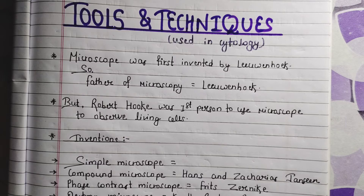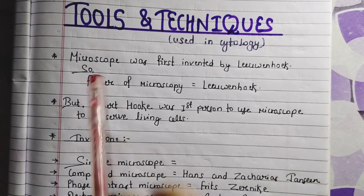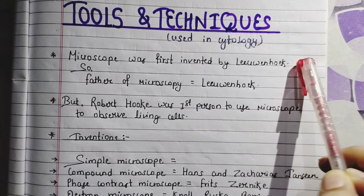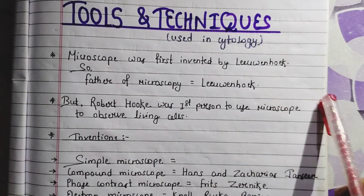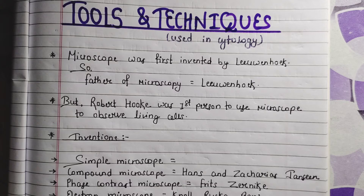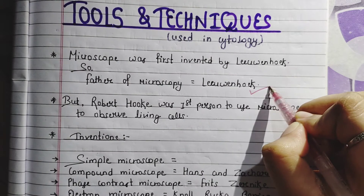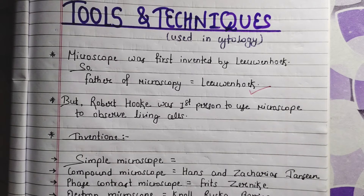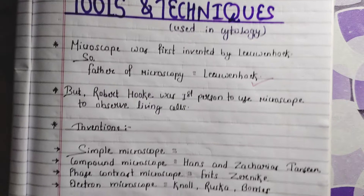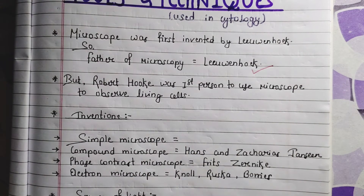Let's see what tools and techniques are used in cytology. First point: microscope was invented by Leeuwenhoek. Microscope was first invented by Leeuwenhoek, so Antonie van Leeuwenhoek is the father of microscopy. But the microscope was used to observe living cells for the first time by Robert Hooke. So: invented by Leeuwenhoek, first used by Robert Hooke.